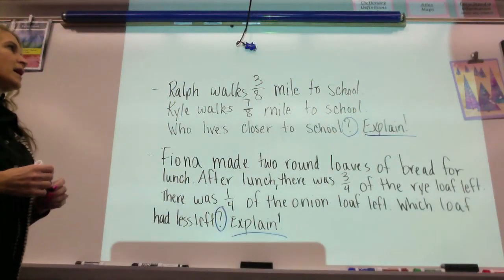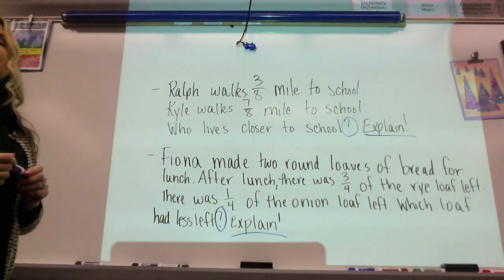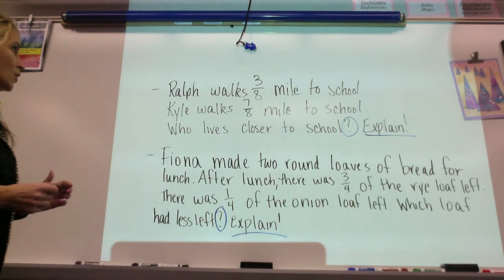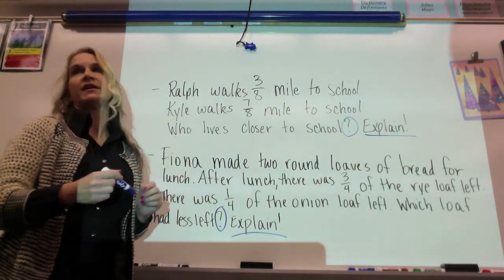Ralph walks three-eighths of a mile to school. Kyle walks seven-eighths of a mile to school. Who lives closer to school and then explain?